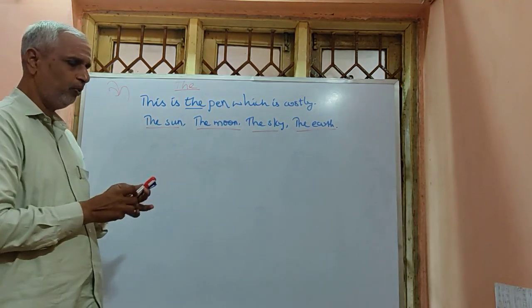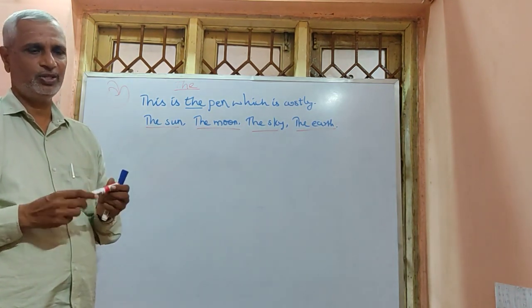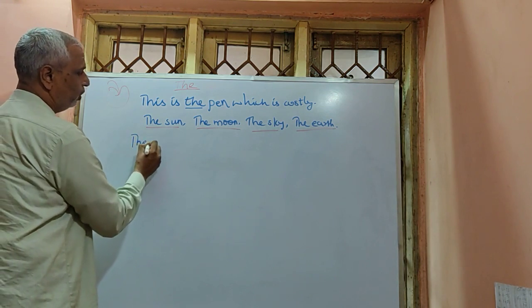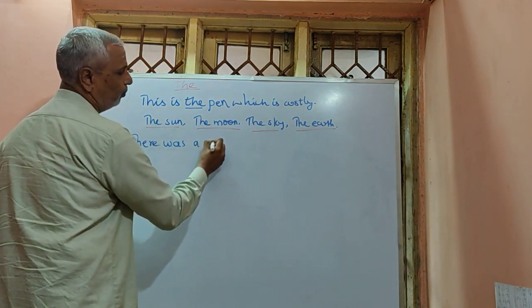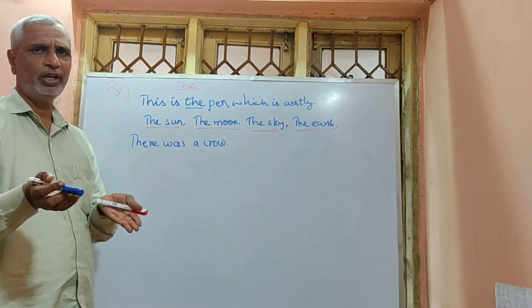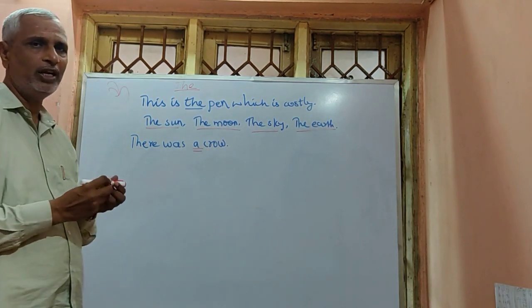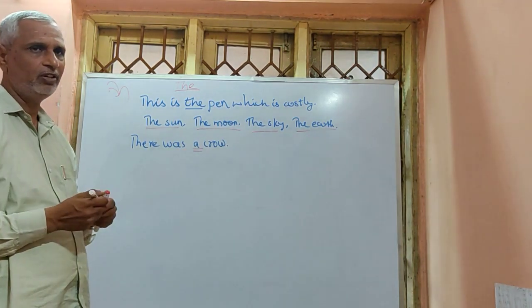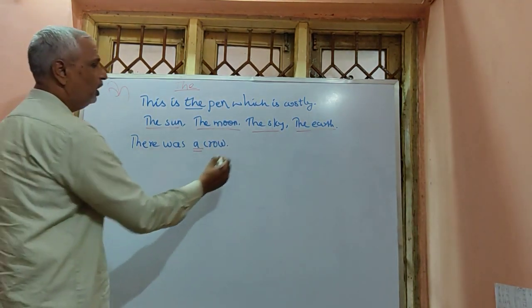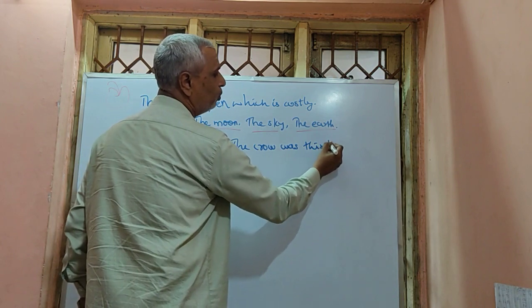When we speak about something for the first time, we use article 'a', 'an', or indefinite articles. For example, in stories: 'Once upon a time, there was a crow.' I don't know which crow I am talking about, so I use the indefinite article. When I speak about this crow for the second time, I should use 'the crow': 'The crow was thirsty.'